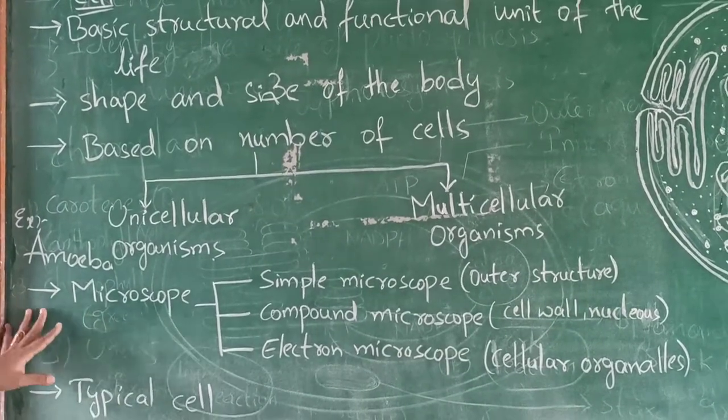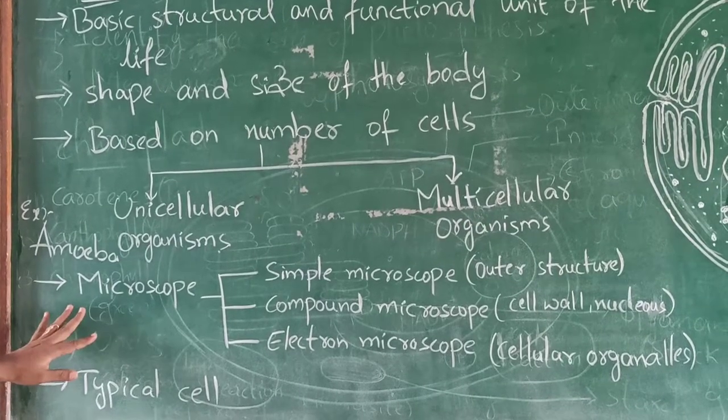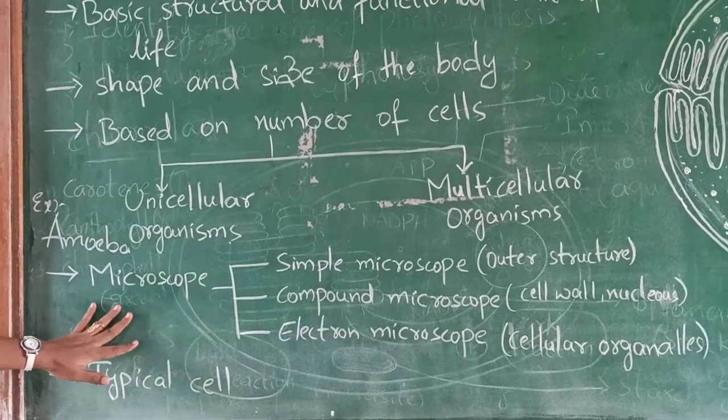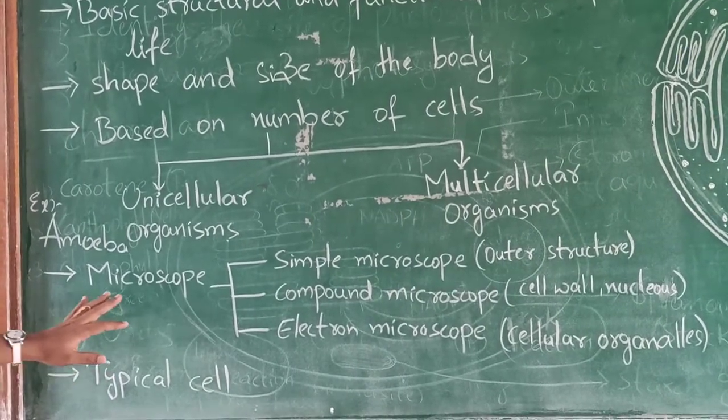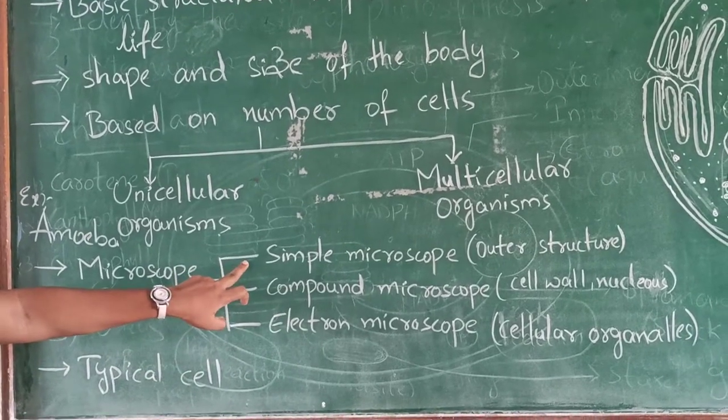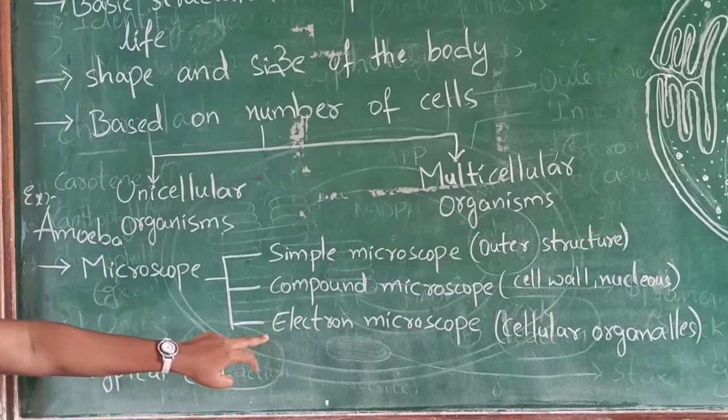Microscope is invented by Robert Hooke and Antonie van Leeuwenhoek. These two scientists invented the microscope. There are different types of microscopes: simple microscope, compound microscope, and electron microscope.